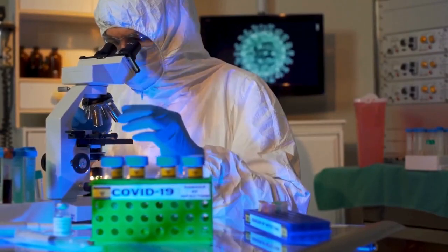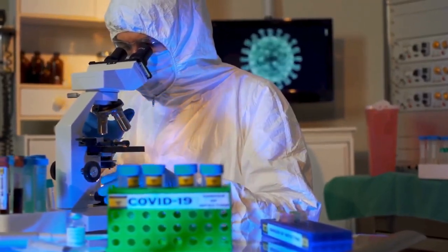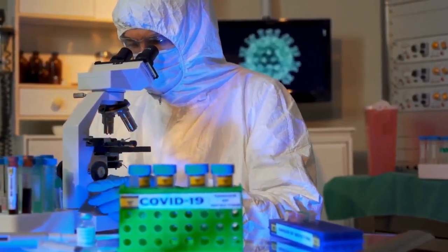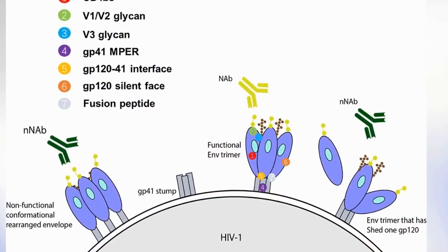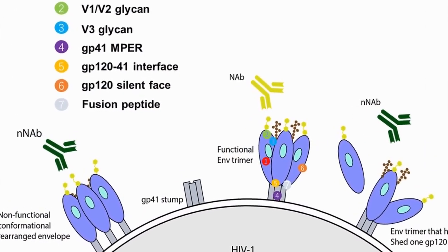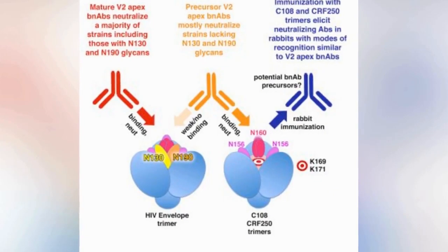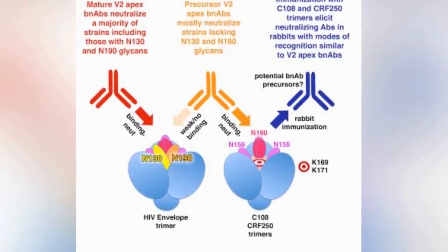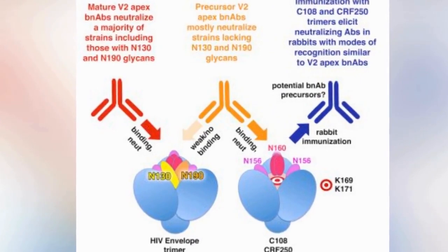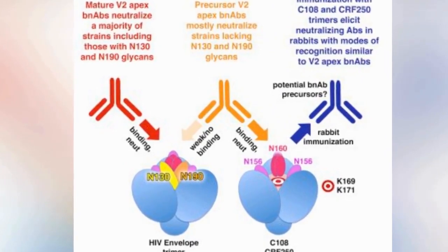If not for immune responses, diseases like COVID-19 would be as lethal as AIDS. Broadly neutralizing antibodies offer a glimpse of hope. They can neutralize multiple strains of HIV, recruiting other immune responses to suppress the virus even off ART.